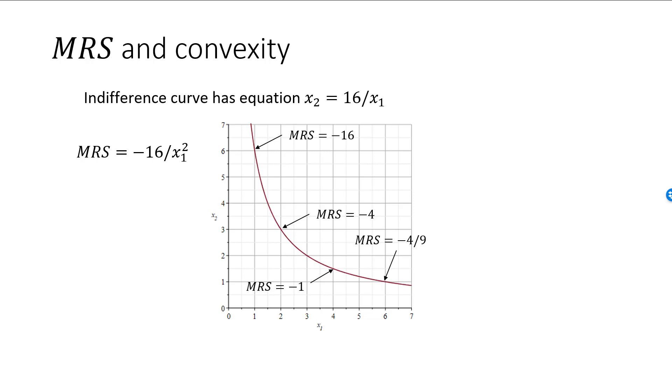So you can see that it is quite natural for the absolute value of MRS to decrease as we move to the right, which means that MRS will increase as we move to the right, which then means that the indifference curve should be convex.